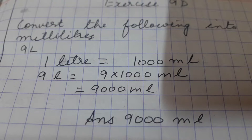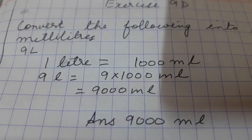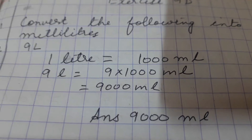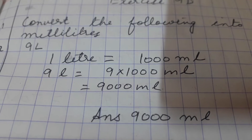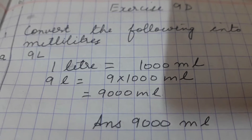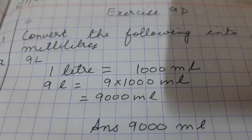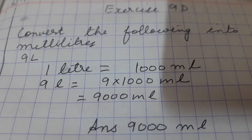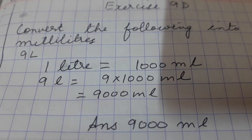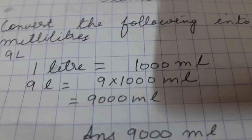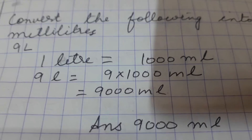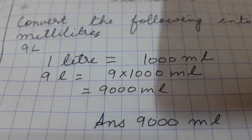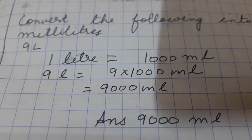You know that one liter is equal to one thousand milliliters, or vice versa, one thousand milliliters is equal to one liter. So to convert liters into milliliters, we multiply by one thousand. And to convert milliliters into liters, we divide by one thousand.